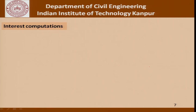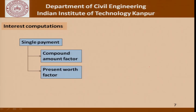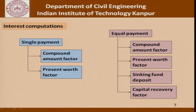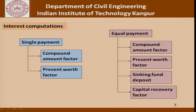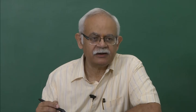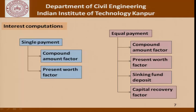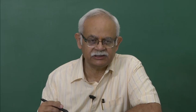Now let us understand how to do interest computations. There are two classifications: single payment, where we talk about a compound amount factor and a present worth factor; and equal payments, which include the compound amount factor, present worth factor, sinking fund deposit, capital recovery factor, and so on. These are simple factors determinable from first principles, but tables are readily available for engineers to find the factor to multiply a certain income or expenditure to get the present worth.